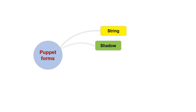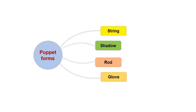Puppets can be classified into four types: string puppets, shadow puppets, rod puppets, and glove puppets. Just remember these four types - string, shadow, rod, glove.